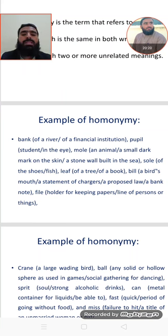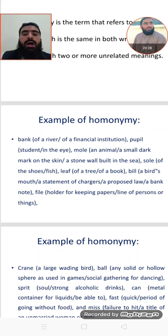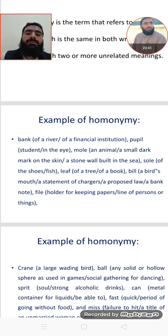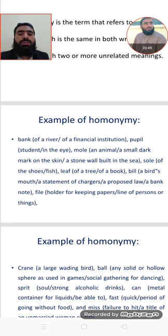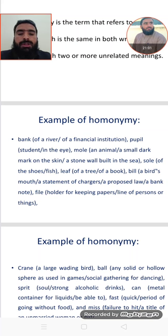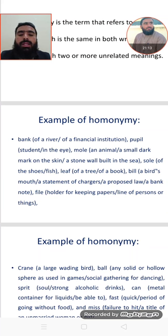More examples: 'mole'—an animal (a small dog-like creature) or a mark on the skin; 'mole' also means a stone wall built in the sea. 'Sole'—the sole of a shoe or a type of fish. 'Leaf'—a well-known example: leaf of a tree and leaf of a book. Same spelling, same word, same structure in spoken or written form, but two or more unrelated meanings. 'Bill'—a bird's bill (mouth), a statement of charges, proposed law, a banknote, a file holder, or a queue.